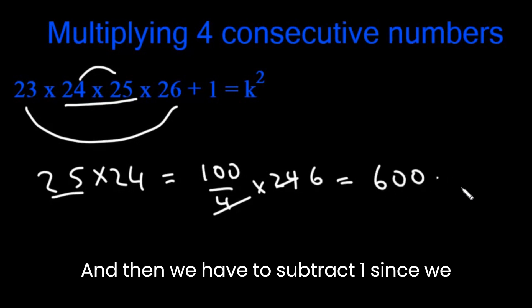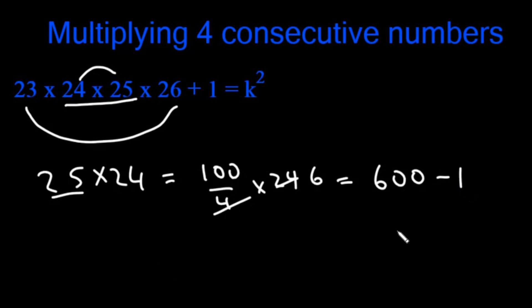And then we have to subtract 1 since we chose the middle two. This is 599. So our k is 599.